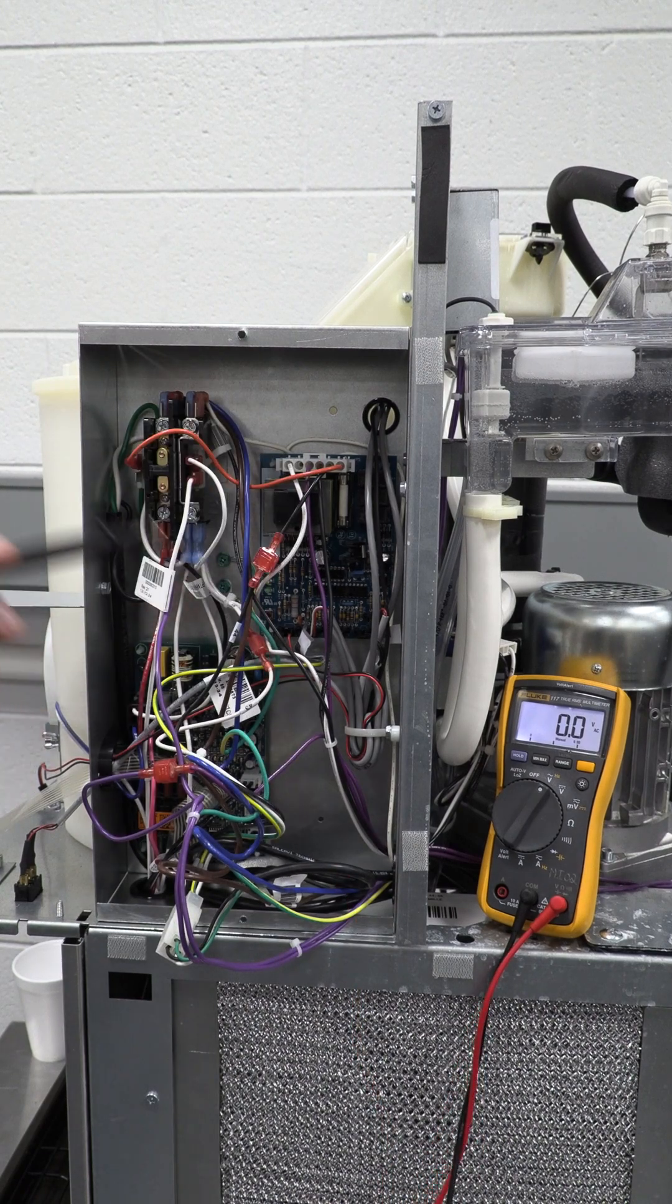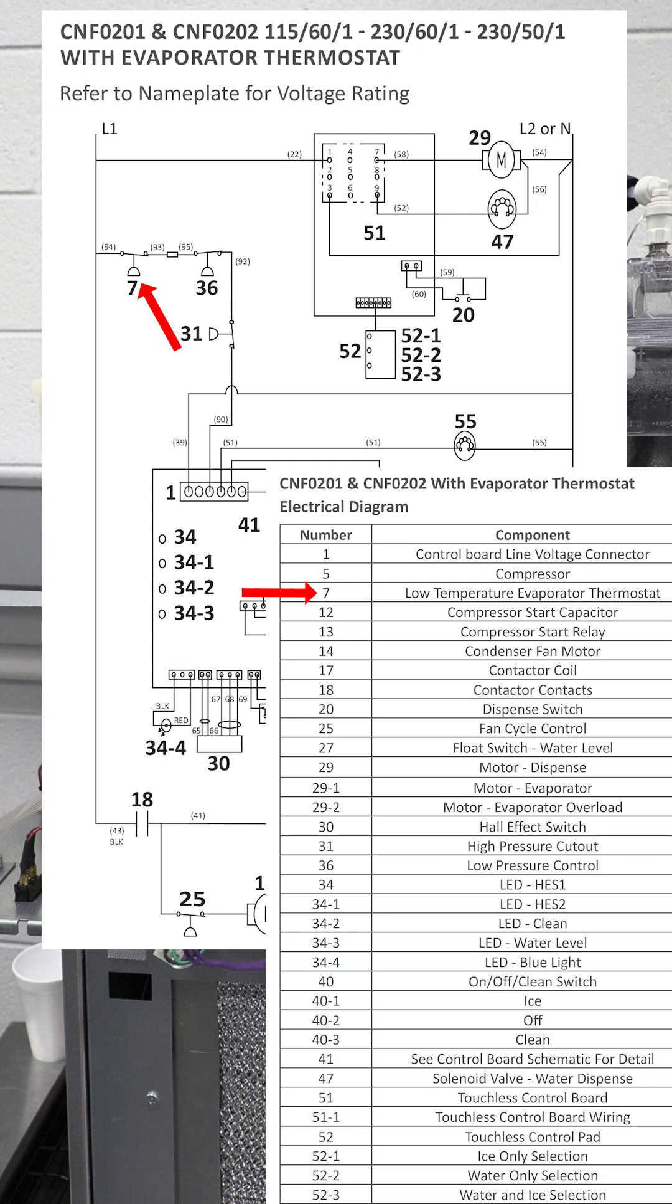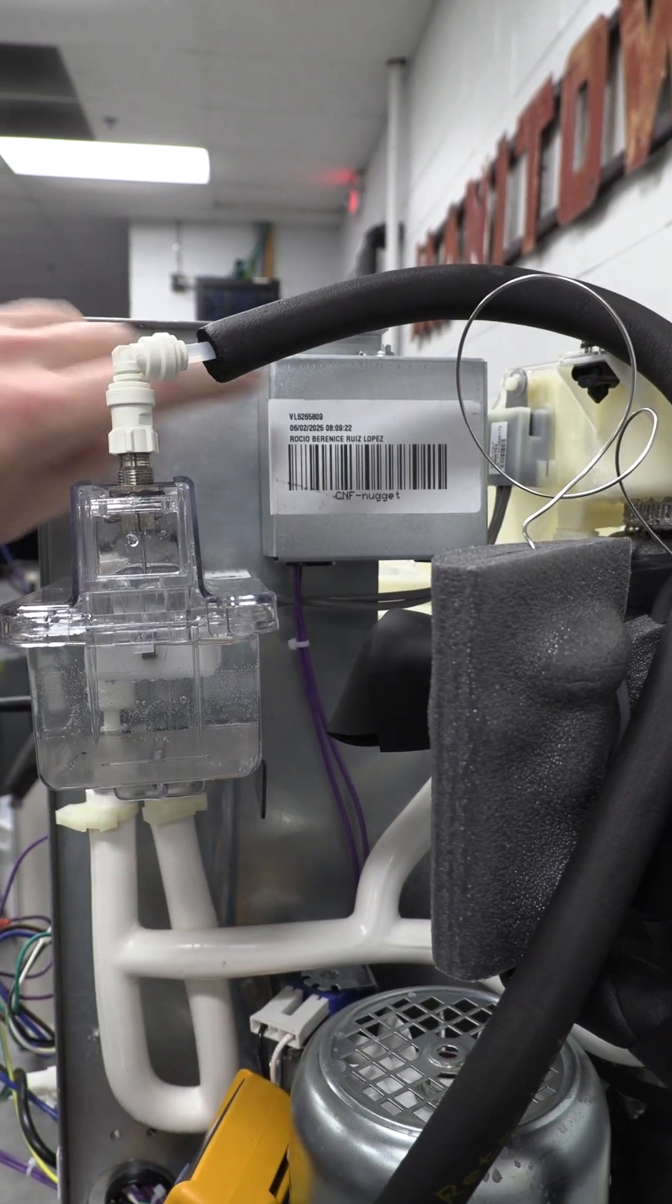I'm going to start with connecting one of my leads to the neutral. If we take a look at the schematic, you'll see that the line voltage travels through component number seven. Taking a look at the electrical chart, you'll see that component number seven is the low temperature evaporator thermostat.